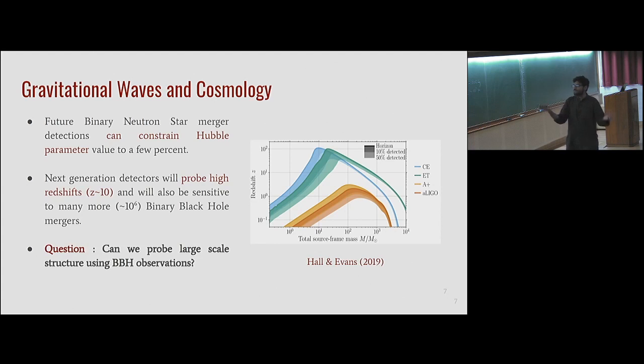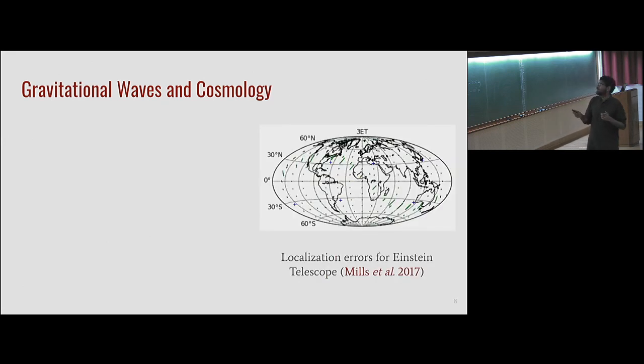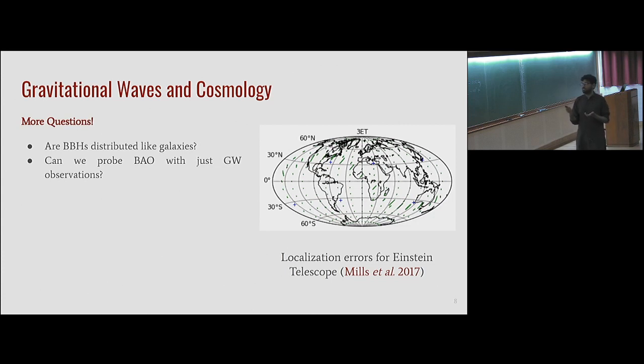The question naturally to ask is, can we probe the large-scale structure using the binary black hole observations? Because we literally have a survey of black holes, binary black holes now. More questions that can be asked are: are binary black holes distributed like galaxies? Can we probe the baryon acoustic oscillations with just gravitational wave observations? Does the power spectrum or the correlation function evolve with the redshift?